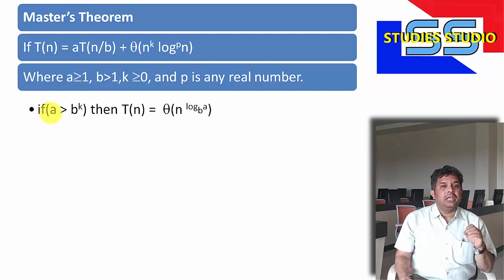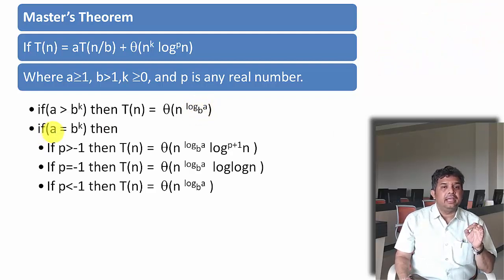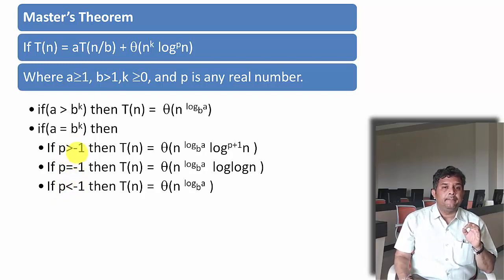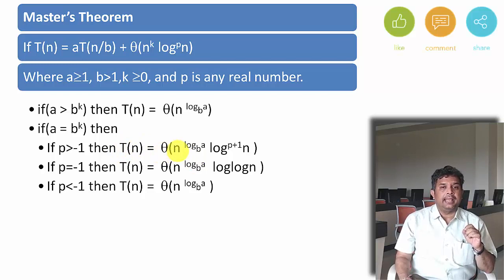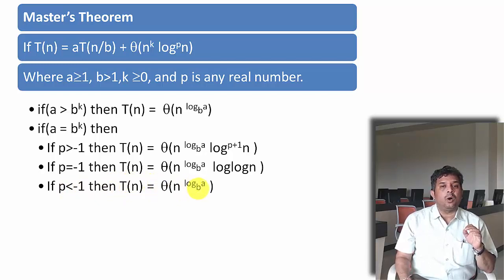If a is greater than b^k, then the complexity will be Θ(n^(log base b of a)). The second condition is if a equals b^k, then we compare the value of p — whether it is greater than minus 1, equal to minus 1, or less than minus 1. If p is greater than minus 1, then the complexity will be Θ(n^(log base b of a) · log^(p+1) n). If p equals minus 1, then this is the complexity. And if p is less than minus 1, then the complexity will be Θ(n^(log base b of a)).